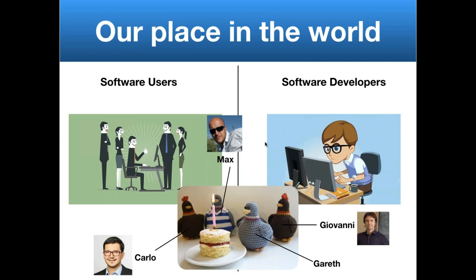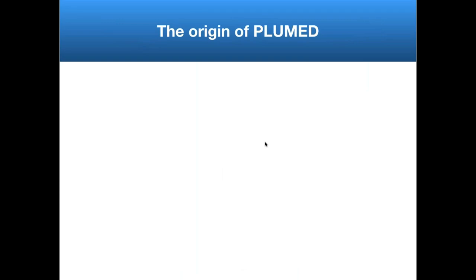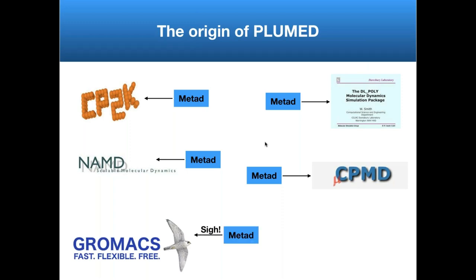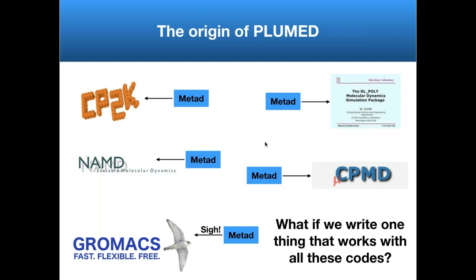The other developers involved in the development of Plumed are Carlo, Max, and Giovanni. The reason we developed Plumed — its origin — was that we were all working in the same group, the group of Michele Parinello, working on the development of MetaDynamics and various related methods. What we found was that every few years we had to rewrite these pieces of software into another code because we'd need some other application. When GROMACS appeared, Carlos had the genius idea of making one piece of software that works with all these codes, rather than rewriting repeatedly.